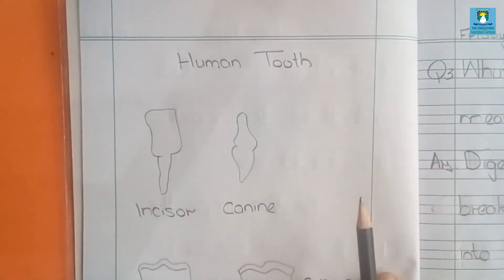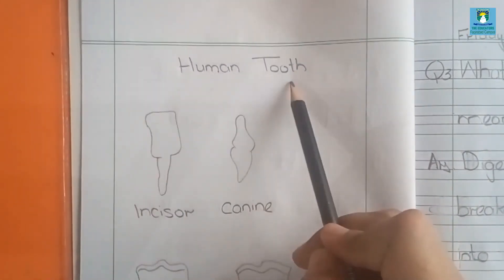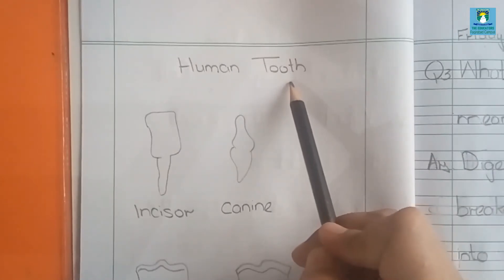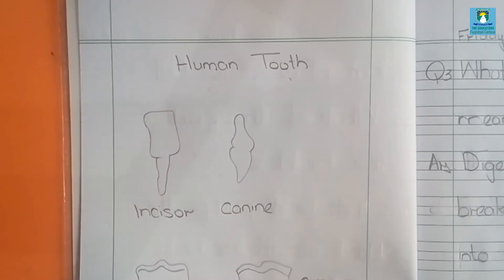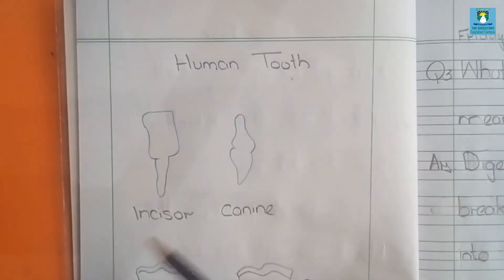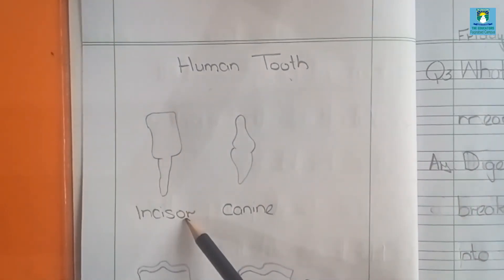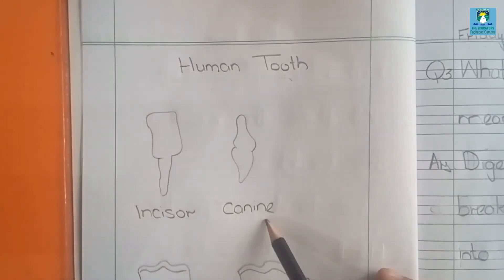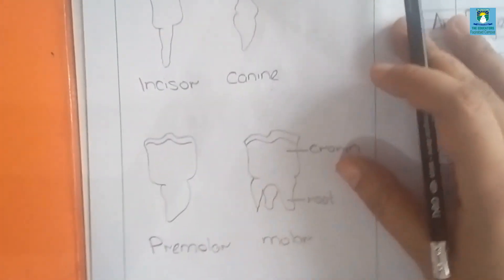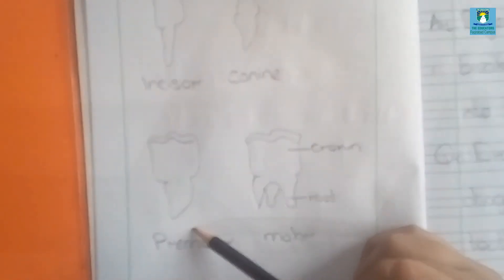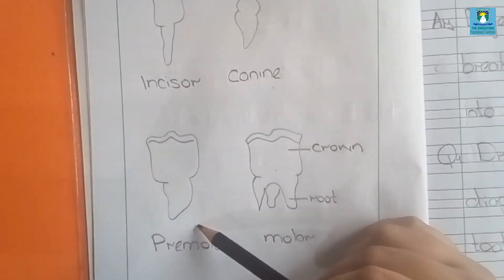First of all, give the heading: Human Tooth. We can draw here four types of human teeth. The first one is incisor, the second is canine, and the third one is premolar.